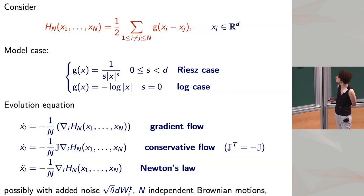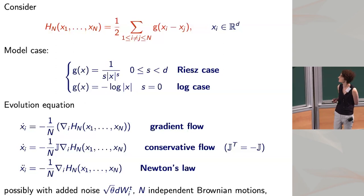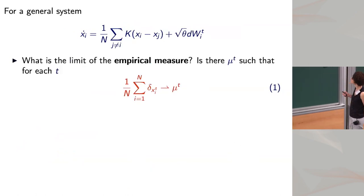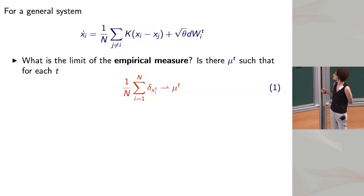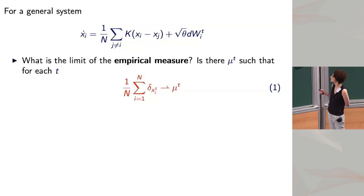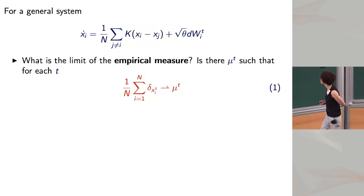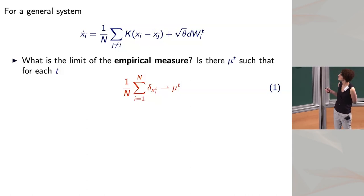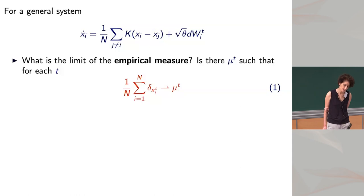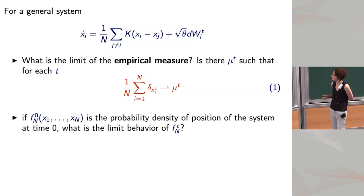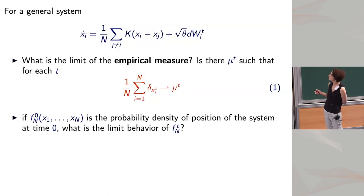The goal is to understand the limit as N goes to infinity — understanding the effective evolution of the system with a more general interaction kernel K. The question is really to understand the limit of the empirical measures: you form the empirical measure as the sum of Dirac masses at all the moving points divided by N, which is a probability measure. You ask whether as N goes to infinity you have a limiting probability density mu_T and what is its evolution.